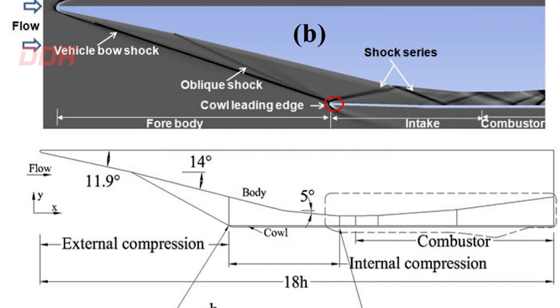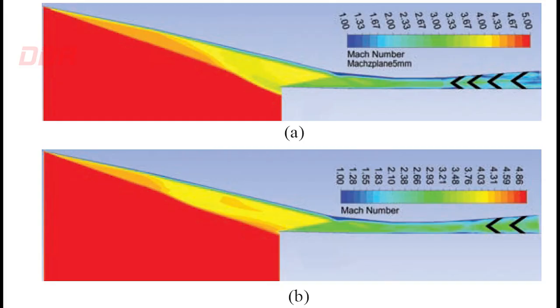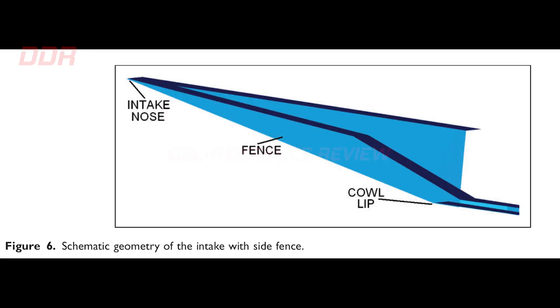The flow is further compressed internally by a converging section which is followed by a constant area isolator. The oblique shocks from the nose and the second ramp do not intersect exactly at cowl lip due to presence of a boundary layer. This boundary layer effect can be seen in the start of the second oblique shock also which does not exactly start at the turning point between the first and second ramps. The third oblique shock starts from the cowl lip and reaches the end of the second ramp. The positions of the shocks can be clearly observed to be away from the geometric turnings due to viscous effects. A side fence is provided from the nose of the intake to the engine cowl lip. This physically prevents the airflow from spilling to the sides but some of it does spill.